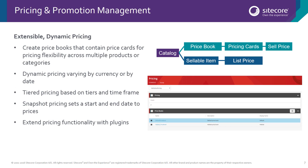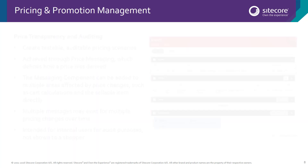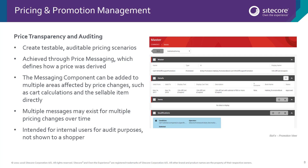We also have extensible and dynamic pricing available out of the box. You create a price book that's associated to a catalogue, and that contains a series of price cards within it. Price cards are used to assign dynamic pricing varying by currency or by date. They also allow you to do tiered pricing based on quantity and time frame, and you can snapshot your pricing to have a start and end date, giving you a really fine-grained level of control over the pricing of the sellable items on your site. All of this functionality is extendable and customizable via the plugin architecture, allowing you to create testable, auditable pricing scenarios.